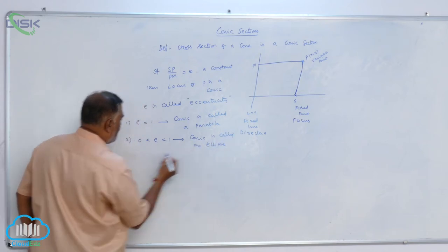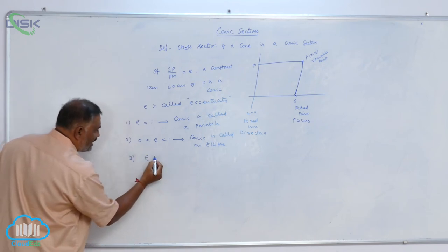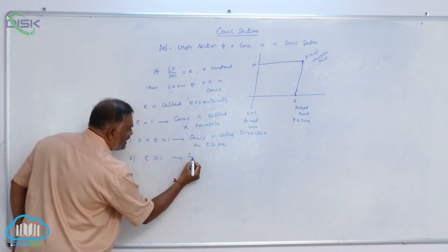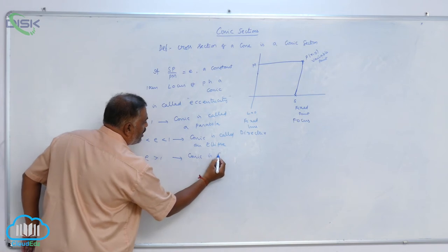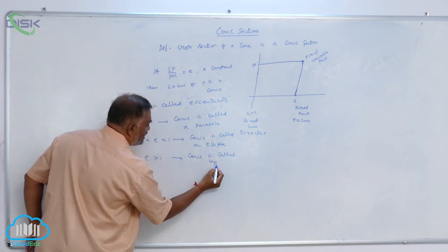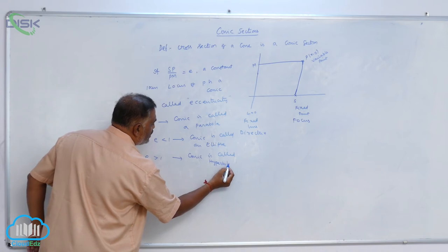Then, number 3. E greater than 1. Conic is called hyperbola.